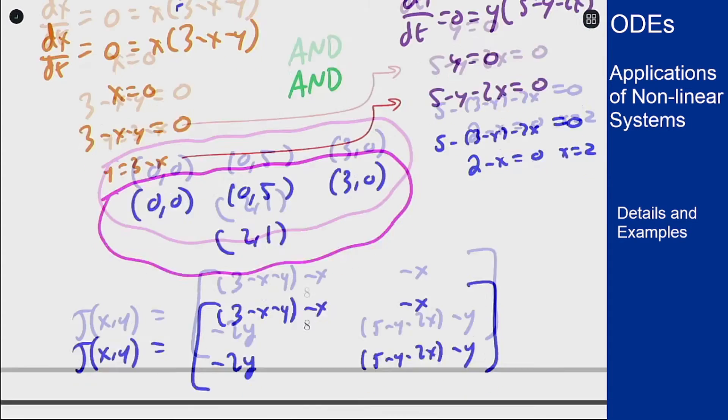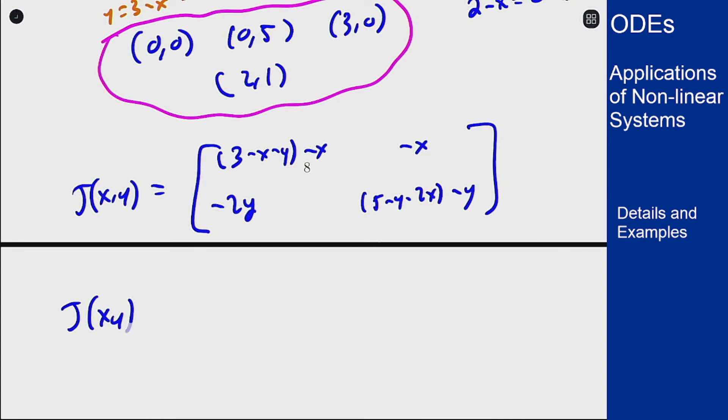and dg/dy is 5 minus y minus 2x and then minus y. So applying this out you get that our J of x,y here is 3 minus 2x minus y, negative x, negative 2y, 5 minus 2y minus 2x. And now we can plug in our equilibrium solutions and see what that gives us.